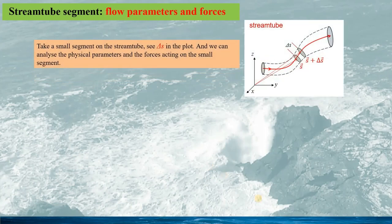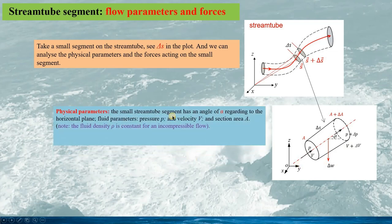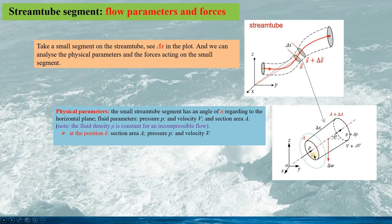Now, take a small segment delta S on the stream tube, and we can analyze the physical parameters and the forces on the small segment. For illustration we enlarge the segment as in this plot, so we can see the small stream tube segment has the angle of alpha with respect to the horizontal plane. The fluid parameters are: pressure p, velocity v, and section area A. For the conventional Bernoulli's equation the flow is assumed incompressible, thus the fluid density rho is a constant. At section S, the section area is A, the pressure is p, and velocity is v.